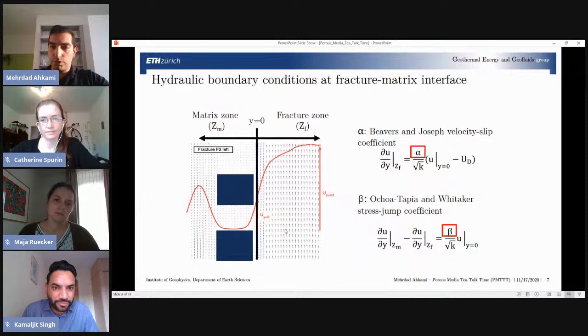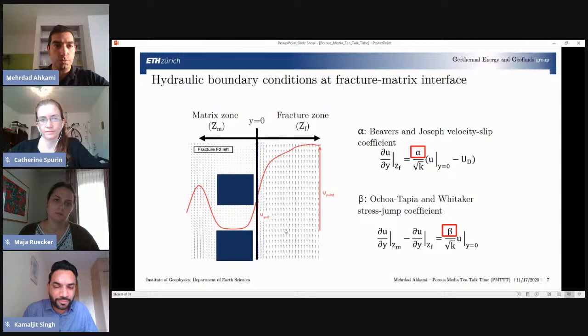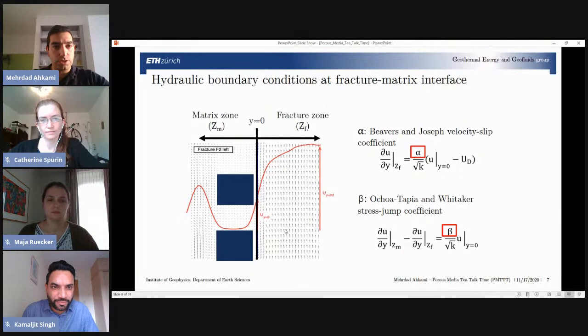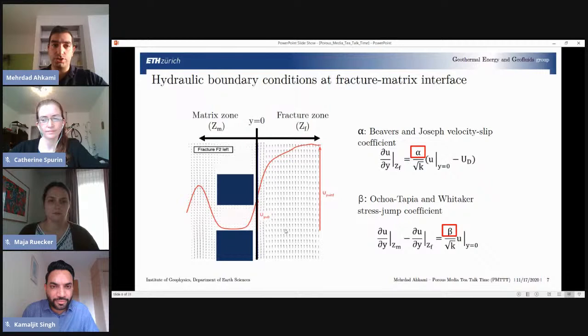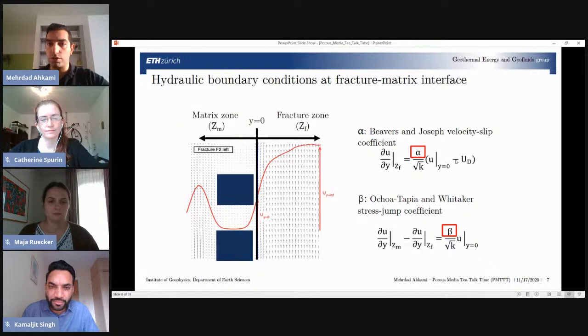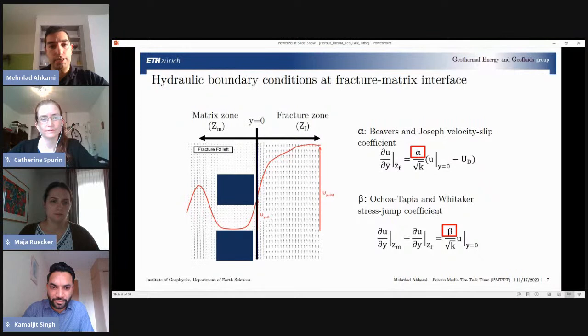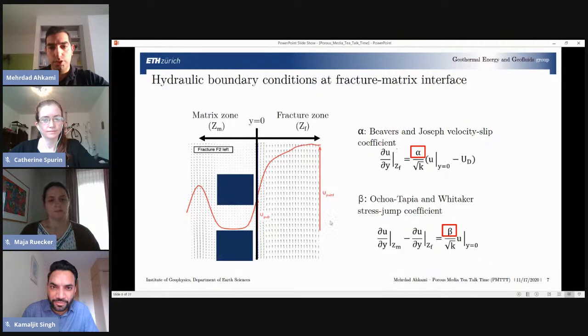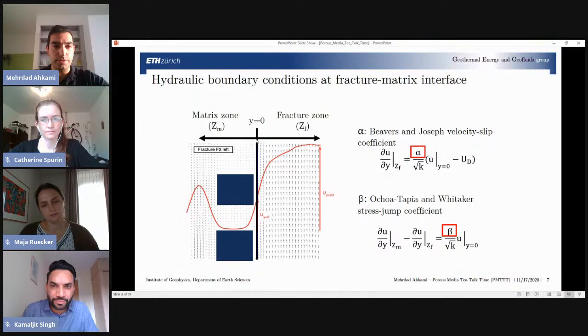After visualizing fluid flow, we studied what we call hydraulic boundary conditions. The application of hydraulic boundary condition is for coupling of flow in fractures and in matrices. In fractures, we solve fluid flow with Navier-Stokes or Stokes equation. In matrices, it's Darcy's equation. Coupling of these two equations at the interface can be very complex. That's why two different boundary conditions are proposed. We're going to talk about two well-known ones, which are Beavers and Joseph velocity-slip coefficient alpha, and Whitaker coefficient beta.